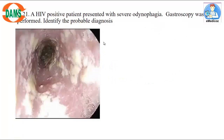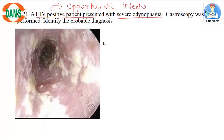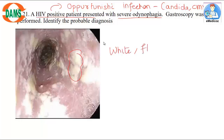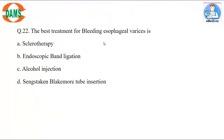Question 21: An HIV positive patient presents with severe odynophagia; gastroscopy was performed. HIV positive patients are prone to opportunistic infections — common ones are Candida, CMV, and HSV. The classic lesion seen on gastroscopy is white flaky lesions, classical of esophageal candidiasis. Correct answer: esophageal candidiasis.